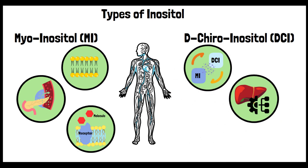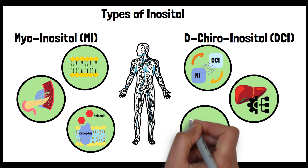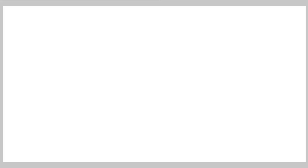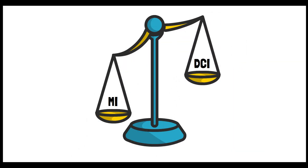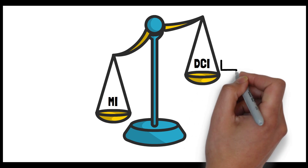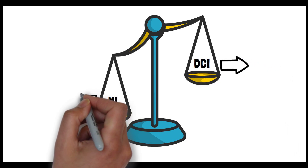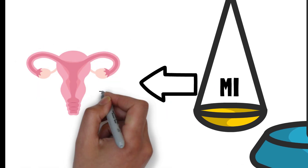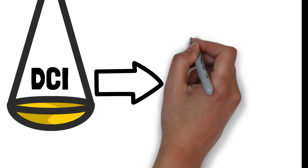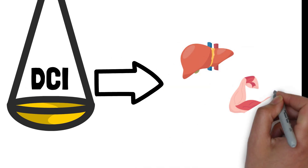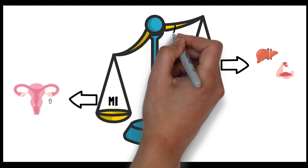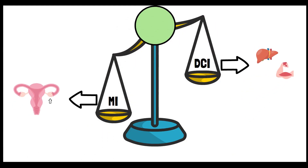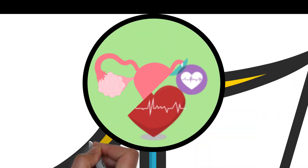DCI plays a role in glycogen synthesis and is involved in insulin signaling pathways. The balance between MI and DCI is crucial for various physiological functions, particularly in relation to insulin action and glucose metabolism. In different tissues, the ratio of MI to DCI varies — for instance, in the ovaries a higher concentration of MI is required for follicular development, while in the liver and muscles, DCI is more predominant. This ratio is believed to be especially important in conditions like polycystic ovary syndrome, PCOS.